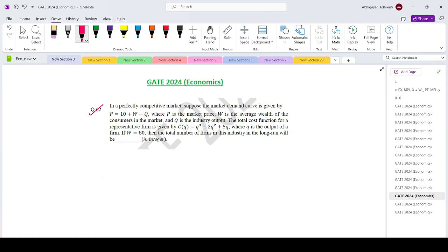The total cost function for a representative firm is given by Q cube minus 2Q square plus 5Q, where Q is the output of the firm. If capital W is 80, then the total number of firms in the industry in the long run is how much?